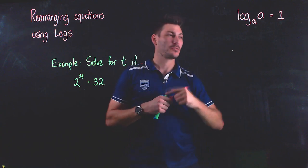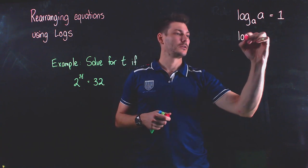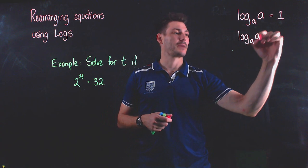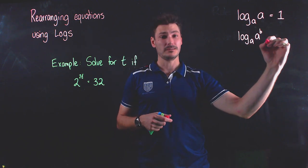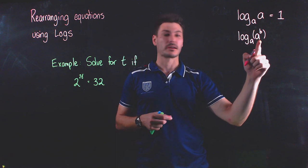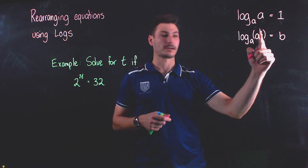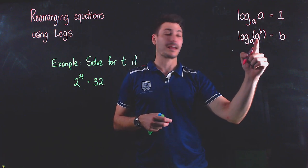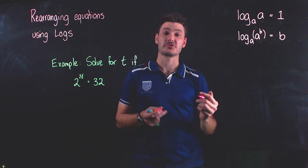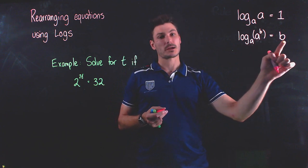In fact I'm going to expand upon that and I'm going to say if you've got log base a of a to the power of something else, let's say b, so this is what I'm evaluating here, that's going to be just equal to the thing in the power, because this log base a and this a are going to kind of cancel each other out, so to speak, and all we're going to be left with is this b here.